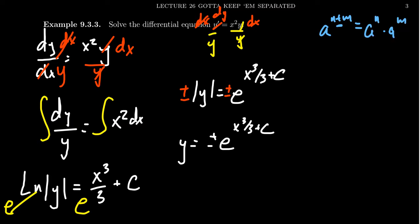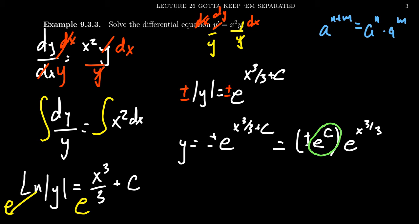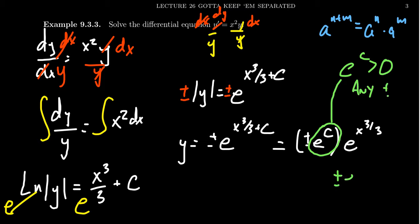Since addition in the exponent means multiplication, we can write this as plus or minus e to the c times e to the x cubed over 3. Now e to the c is always a positive number — any power of e is positive — and since c is unspecified, e to the c represents an arbitrary positive number. Multiplying by positive gives a positive; multiplying by negative gives any negative. So plus or minus e to the c represents any positive or negative number.